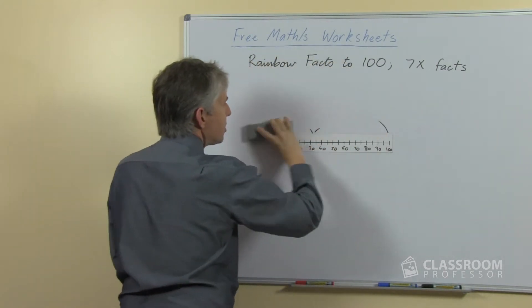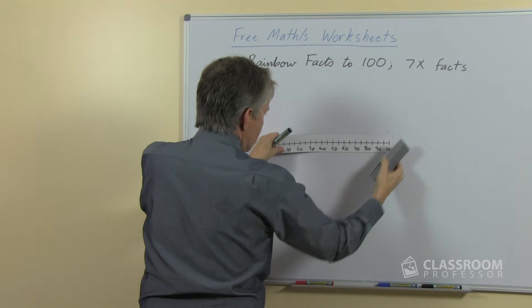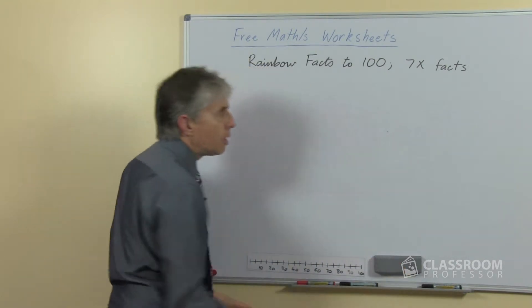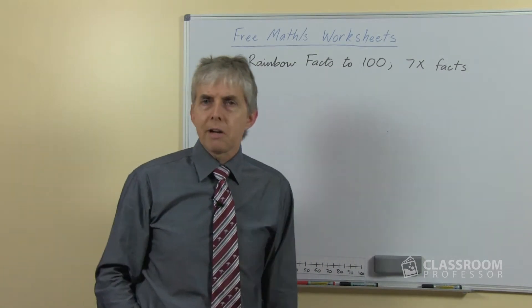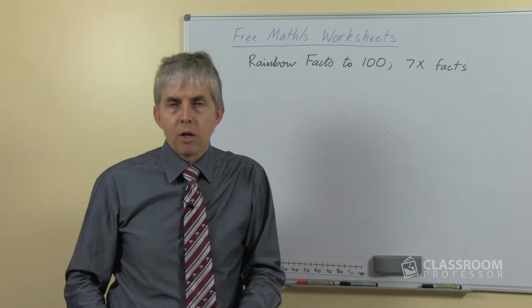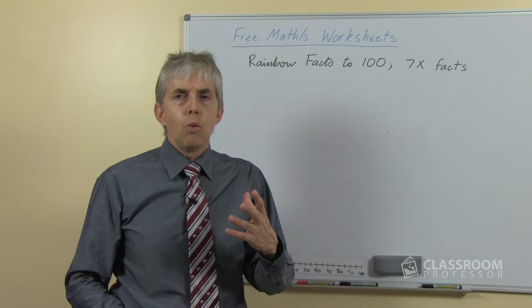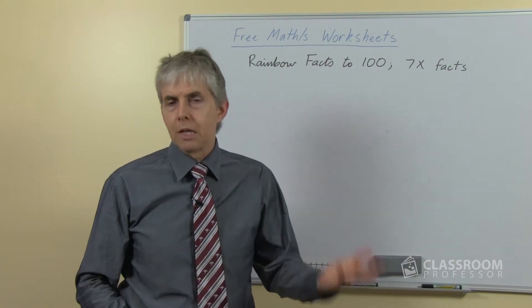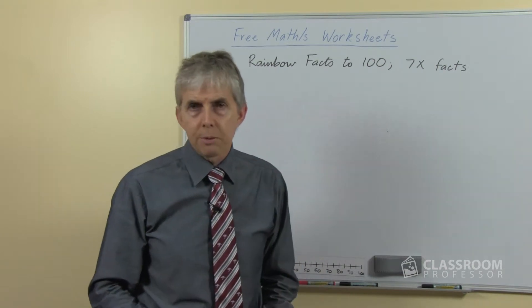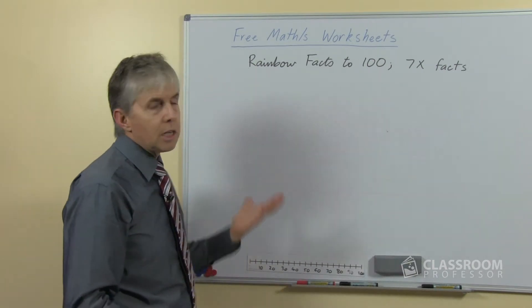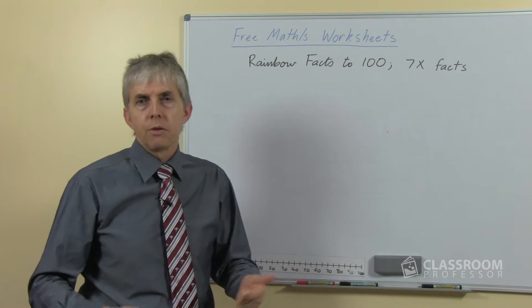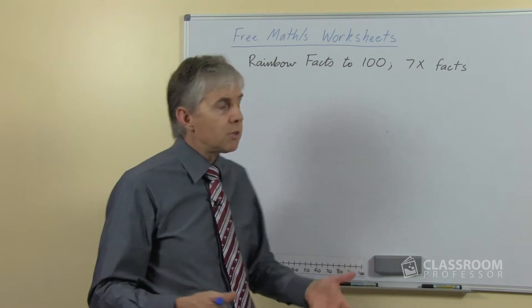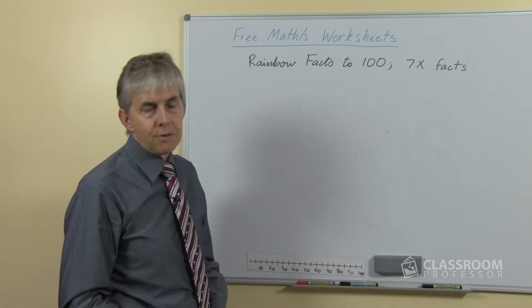Let's look quickly at the seven times facts, so we'll move on from the rainbow facts to a hundred. How can we approach this and what's the strategy? Because as you'll be aware if you've watched my other videos, we adopt a strategies approach. We recommend that for teaching all of the number facts for all four operations, and specifically for multiplication, we've got the doubles, we've got the double-doubles, we've got place value based strategies for the ten times and five times.